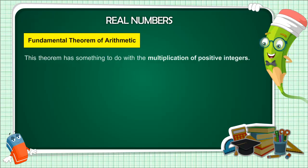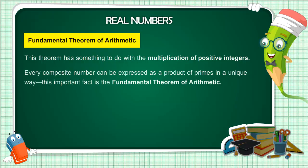This theorem has something to do with multiplication of positive integers. Every composite number can be expressed as a product of primes in a unique way. This important fact is the fundamental theorem of arithmetic.